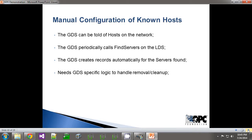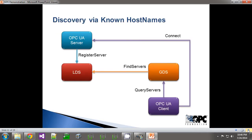The specification doesn't define where this list comes from. But once the GDS has these host names, it can then go and periodically call find servers on the LDS on each one of those hosts. There would have to be some GDS-specific logic to handle the removal and clean-up of records if a server appears to go away after a certain period of time. Through this simple mechanism, your system will quickly adapt to changing network connections as new nodes are installed or as servers are installed or removed, and the GDS database will be updated accordingly.